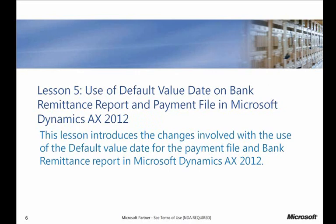Moving on to Lesson 5, where we'll talk about the use of the default value date on the bank remittance report and payment file in Dynamics AX 2012. This feature relates to the Italian fiscal requirement. When the default value date is set up, this date should be used as the recipient value date in the payment file and corresponding bank remittance report. When you run the generate payment process from an accounts payable journal and the default value date has been set up based on the export format selected, the system will use that default value date and populate it into the automatic payment file in record 10, position 23 through 28, and on the bank remittance report.